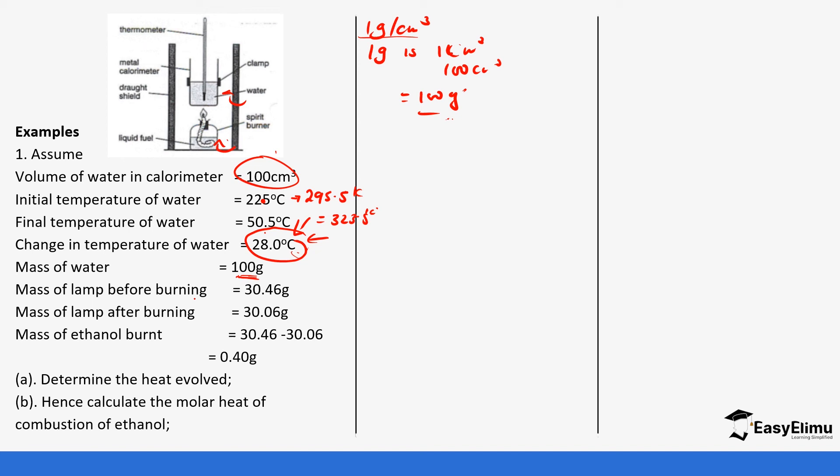Then we also have the mass of the ethanol. The ethanol is written as C2H5OH. This is the formula you need it especially when you calculate the number of moles. Before heating it was 30.46 after it was 30.06 which gives us this difference. So we'll start calculating the heat evolved. Heat change is going to be specific heat capacity times the mass of water times the change in temperature. So this is 4.2 kilojoules per gram per kelvin times the mass of the solution which is 100 grams times change in temperature which is 28 which will give us 11760 and it's kilojoules.